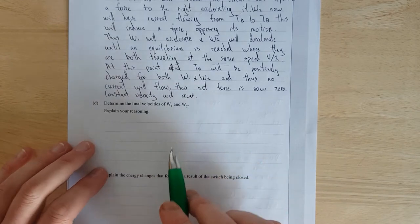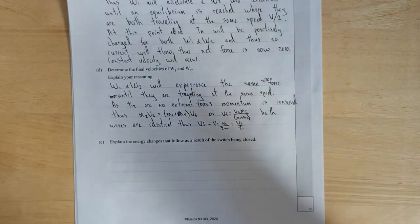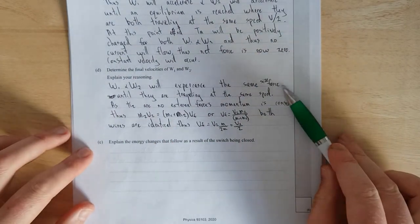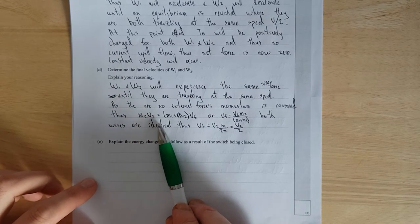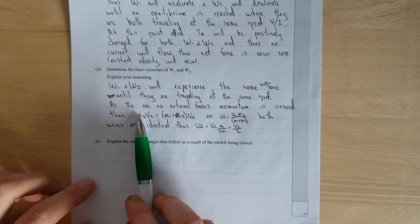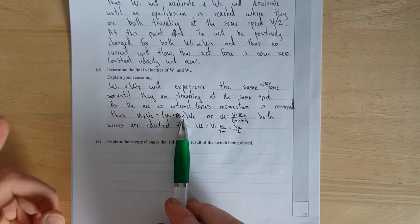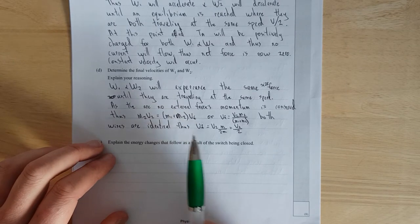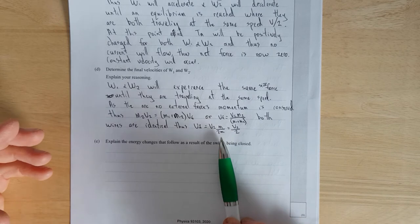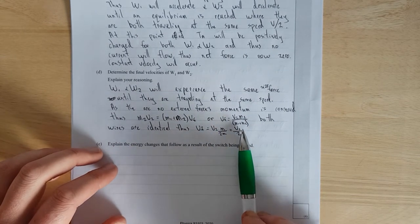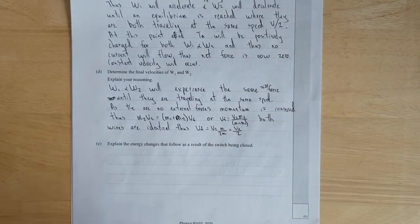Determine the final velocities for wire one and wire two. Explain your reasoning. So, I mean, I've already sort of explained that. I mean, we already sort of figured that out and explained it for here. So I'll just write it up. Right, so I've said wire one and wire two will experience the same size force until they are travelling at the same speed. As there are no external forces, momentum is conserved. Thus, the mass of wire one times the velocity of wire one is equal to the mass of wire two times the velocity of wire two, because that's the initial wire that's moving, is equal to the mass of wire one plus the mass of wire two, because they're travelling at the same speed, so you can sort of think of them as combined, times the final velocity. And then you can rearrange final velocity equals V2 M2 over M1 plus M2. The wires are identical, so you can just say it's just M, instead of M1 and M2. So you end up with M over 2M, and the M's just cancel out, so you just get final velocity is equal to V2, which is the initial velocity of wire two, divided by two. And that tells you the wires will go half the speed. Cool.